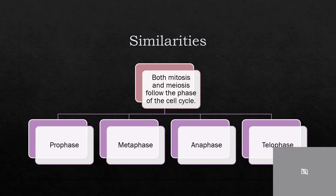Both mitosis and meiosis follow the phases of the cell cycle: prophase, metaphase, anaphase, and telophase.